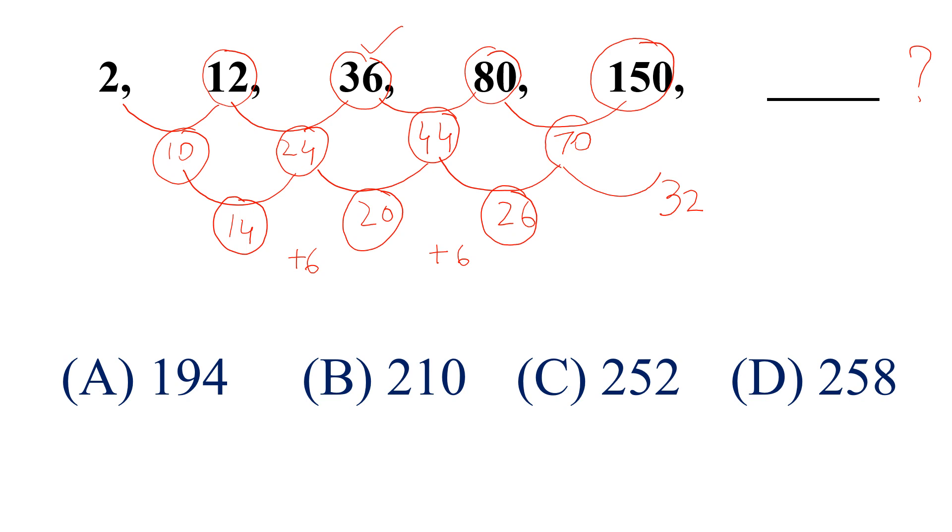Now, 150 plus 70 plus 32, this is 252. And this is the right answer.